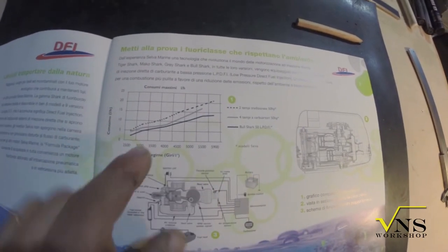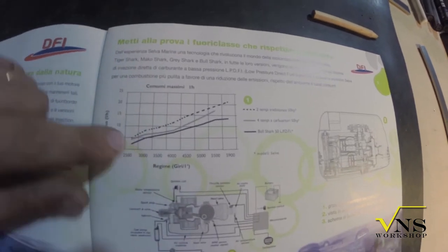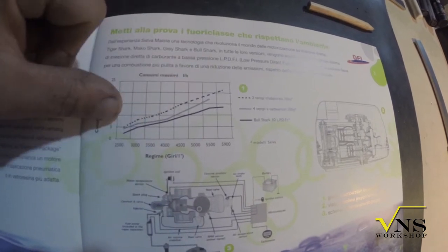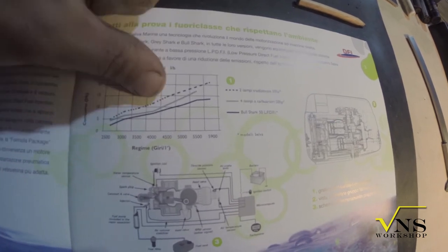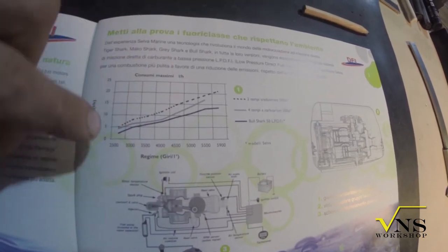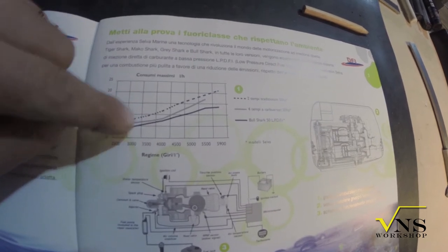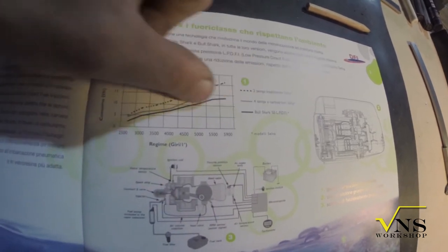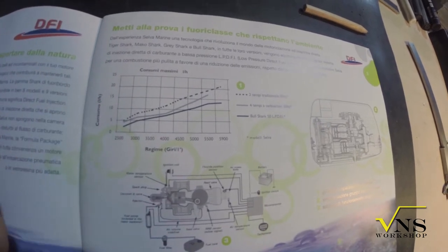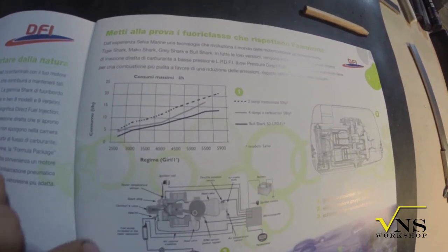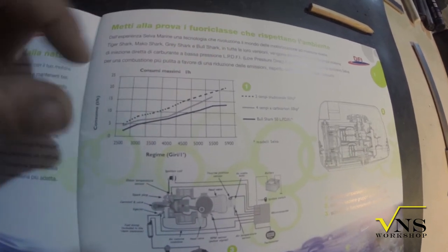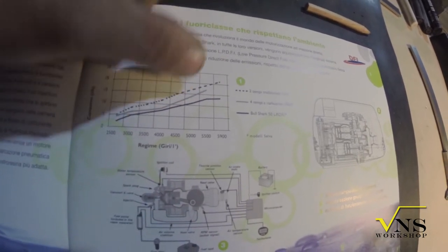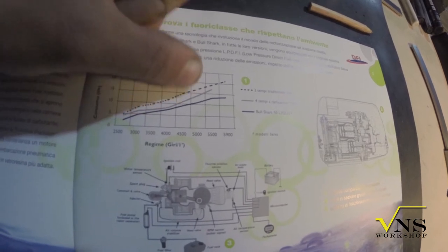Here it's sold in Italian, but you can see the different lines. This is the traditional two-stroke of boat applications, 50 horsepower. So we have the four-stroke 50 horsepower with slightly better consumption of fuel respect to the RPM. Here we have the lowest of the line. We have this LPDFI, low-pressure direct fuel injection, that here we can see with the same horsepower. We have the classical two-stroke, the four-stroke, and this system.